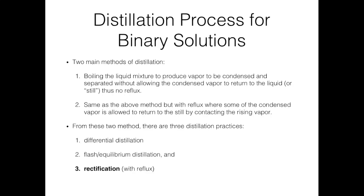This video is about the distillation process for binary solutions. There are two main methods of distillation. Method number one is by boiling the liquid mixture to produce vapor to be condensed and separated without allowing the condensed vapor to return back to the liquid. This liquid is also known as the still, and when this is not allowed, we call this distillation method distillation without reflux.